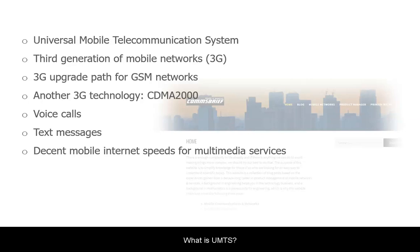There have been two main paths for 3G deployments: one for GSM networks and the other for DAMPS and IS95. UMTS was the 3G upgrade path for GSM networks, while CDMA2000 was the 3G upgrade path for other 2G technologies like DAMPS and IS95.